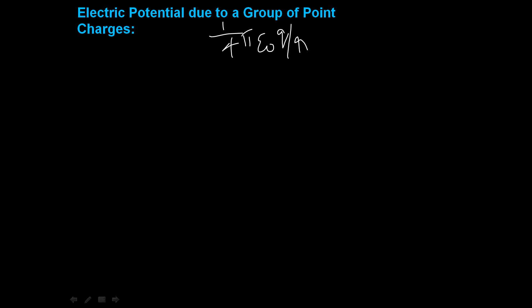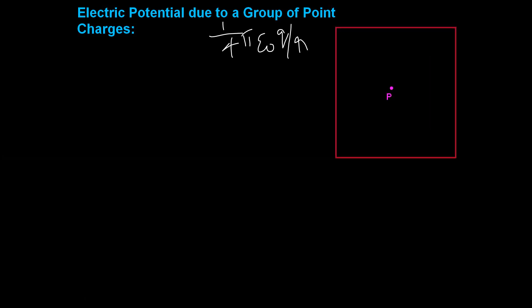Now we are going to consider n number of charges which are surrounding a point P. Let us consider a point P at which a unit positive charge is placed, and there are charges q1, q2, q3, and so on up to qn, located at distances r1, r2, r3, and so on.